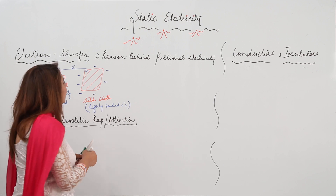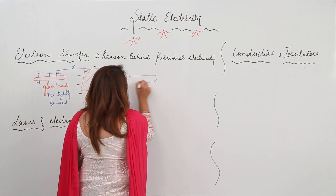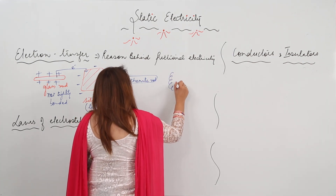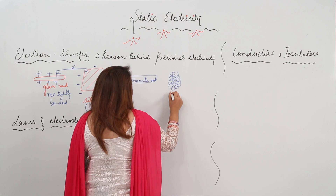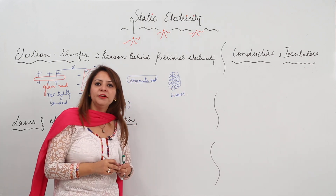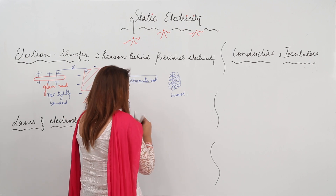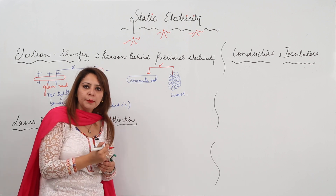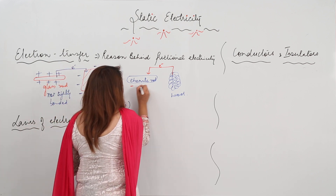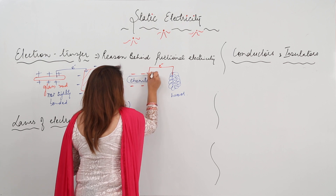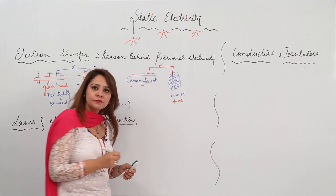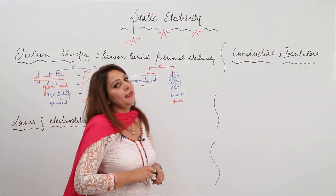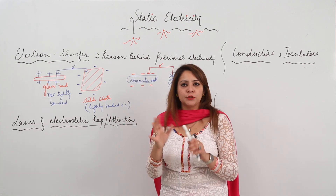Likewise, if I have an ebonite rod and I rub it with wool, electrons flow from wool to the ebonite rod. As a result, the ebonite rod acquires a negative charge and the wool acquires a positive charge. So these bodies become charged bodies. This is the electron transfer concept which explains frictional electricity.